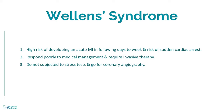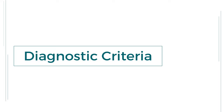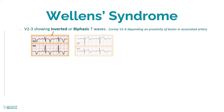Coming on to the diagnostic criteria of Wellens syndrome. These include leads V2 and V3 showing negative and symmetrical deep T waves or biphasic T waves. The changes may rarely extend from V1 to V6, depending on the proximity of the lesion in the associated artery.